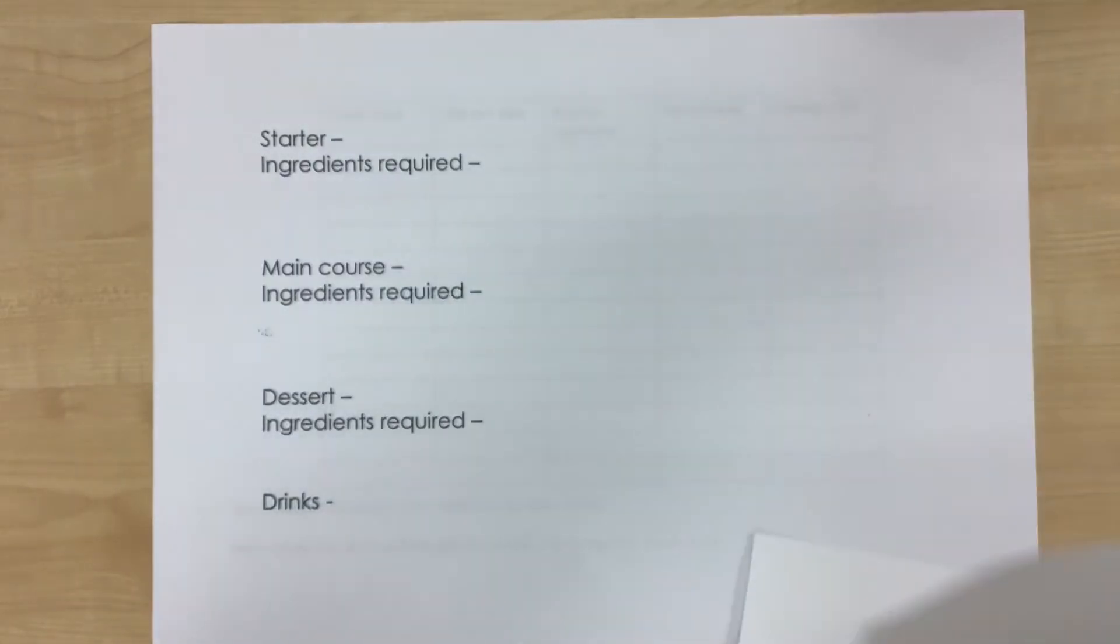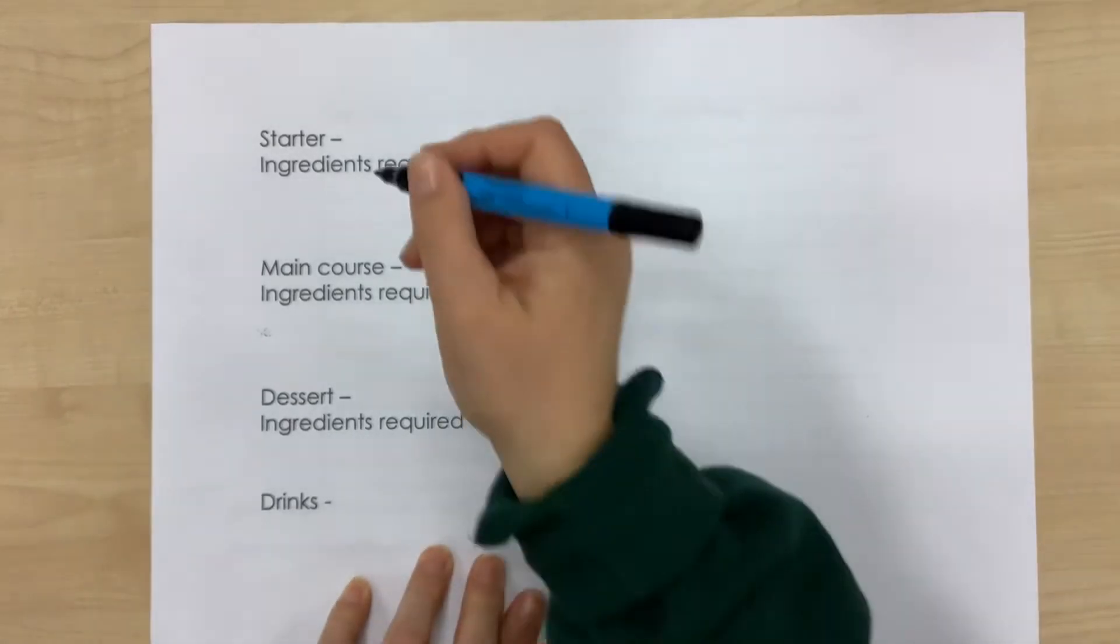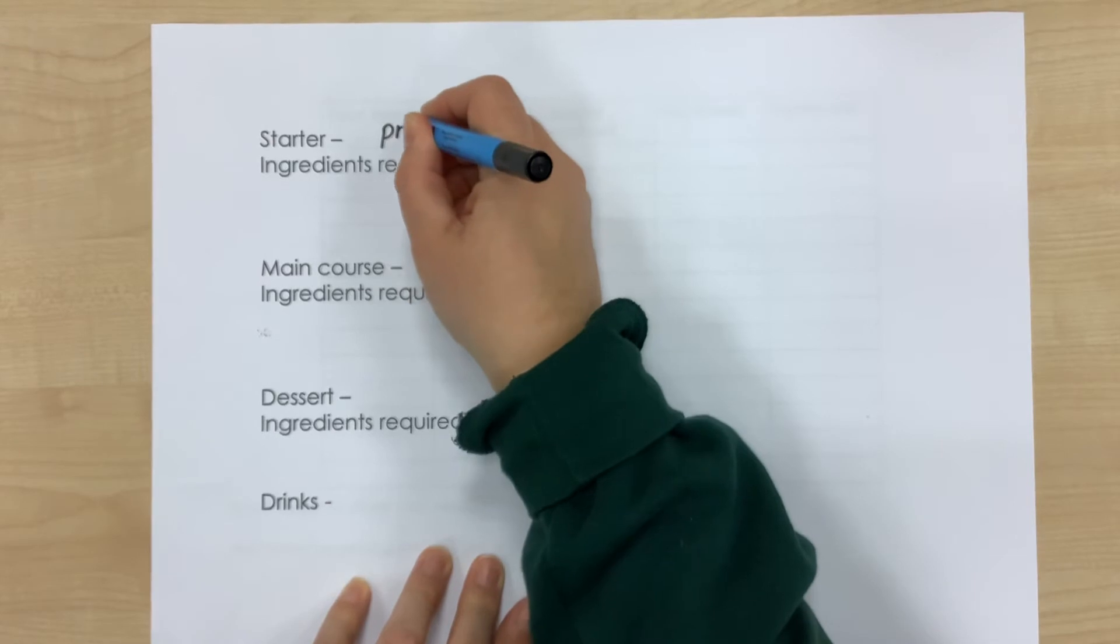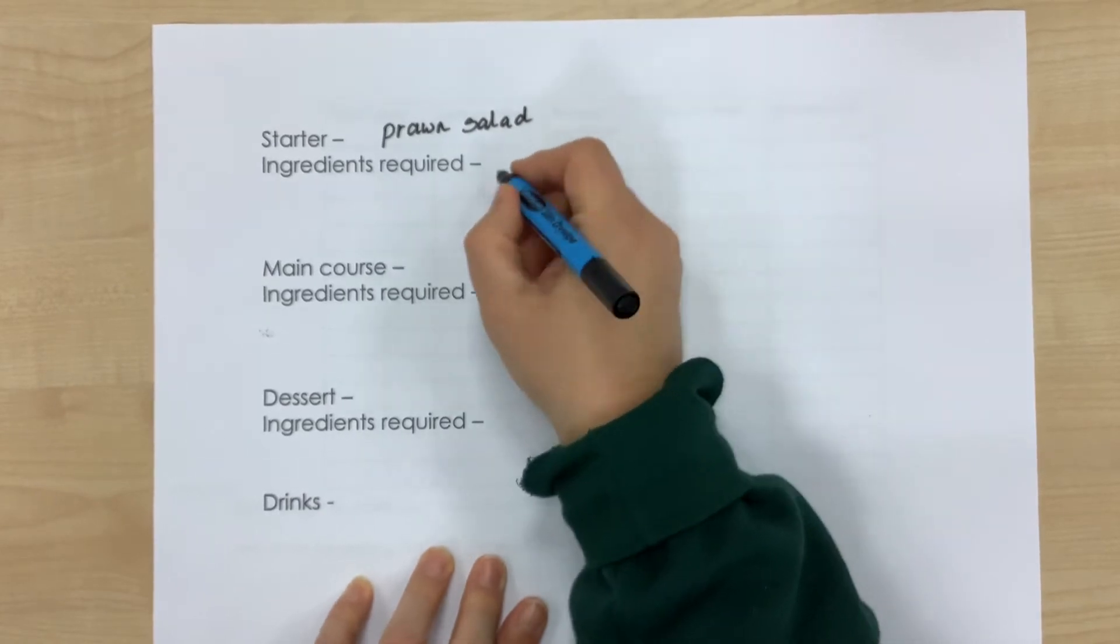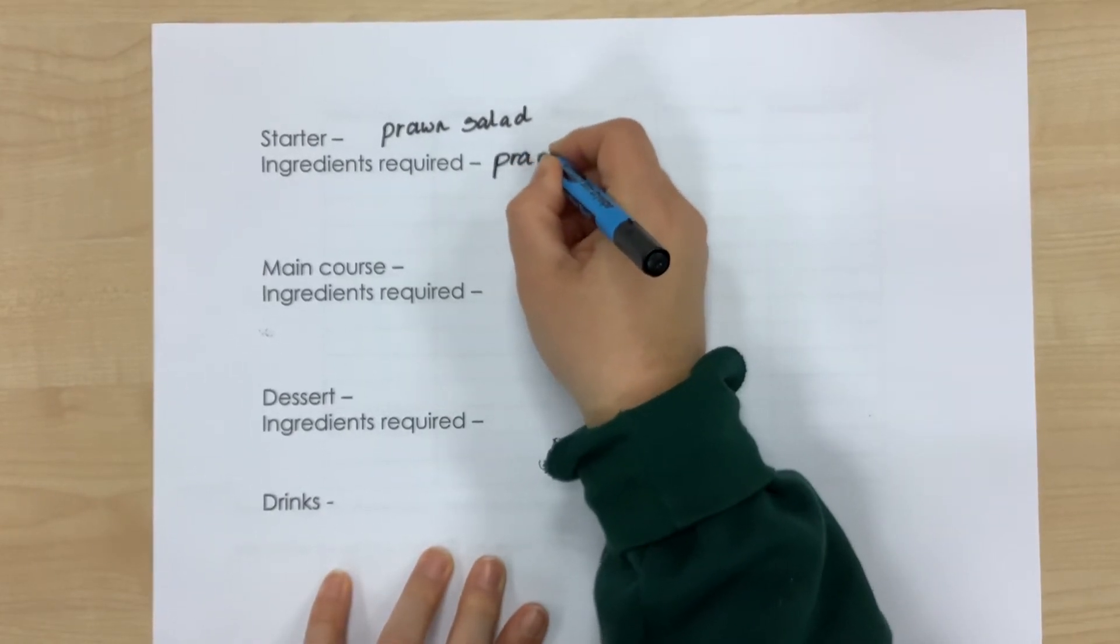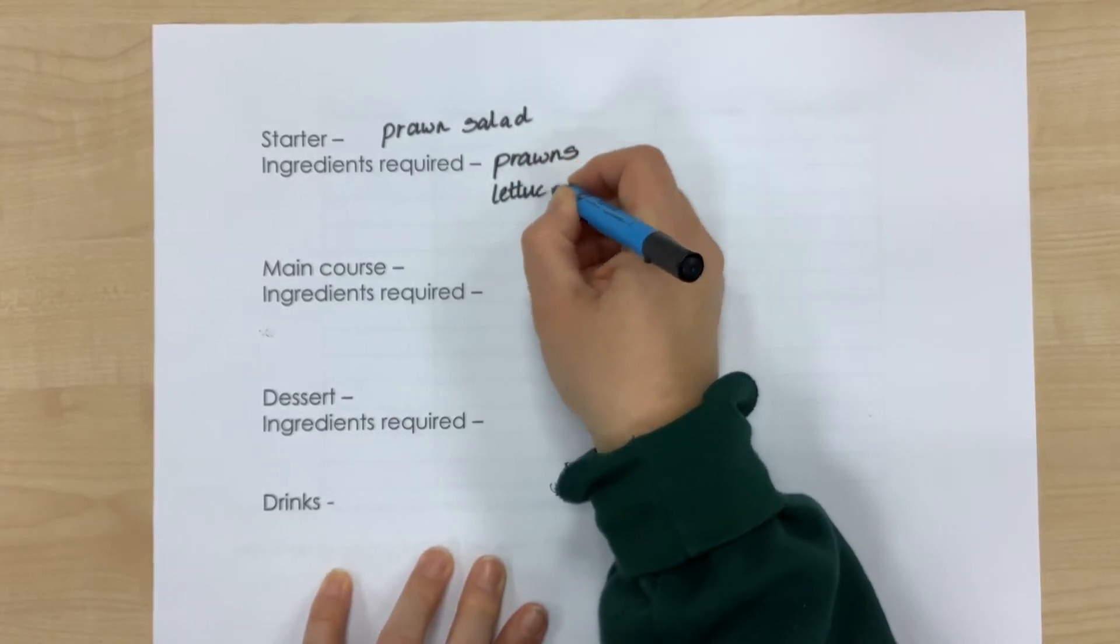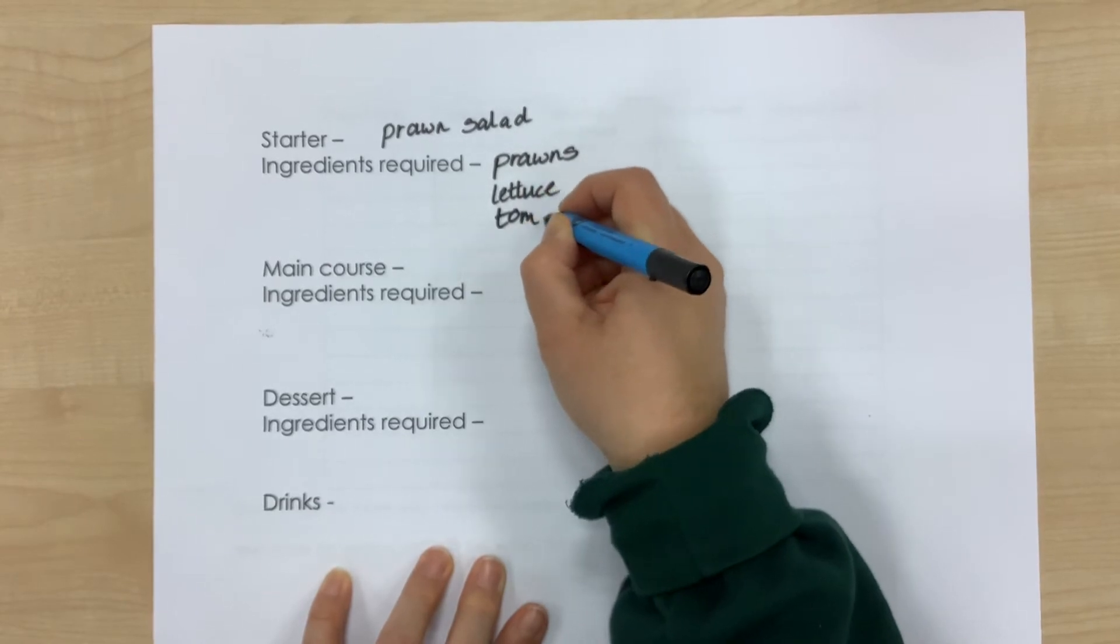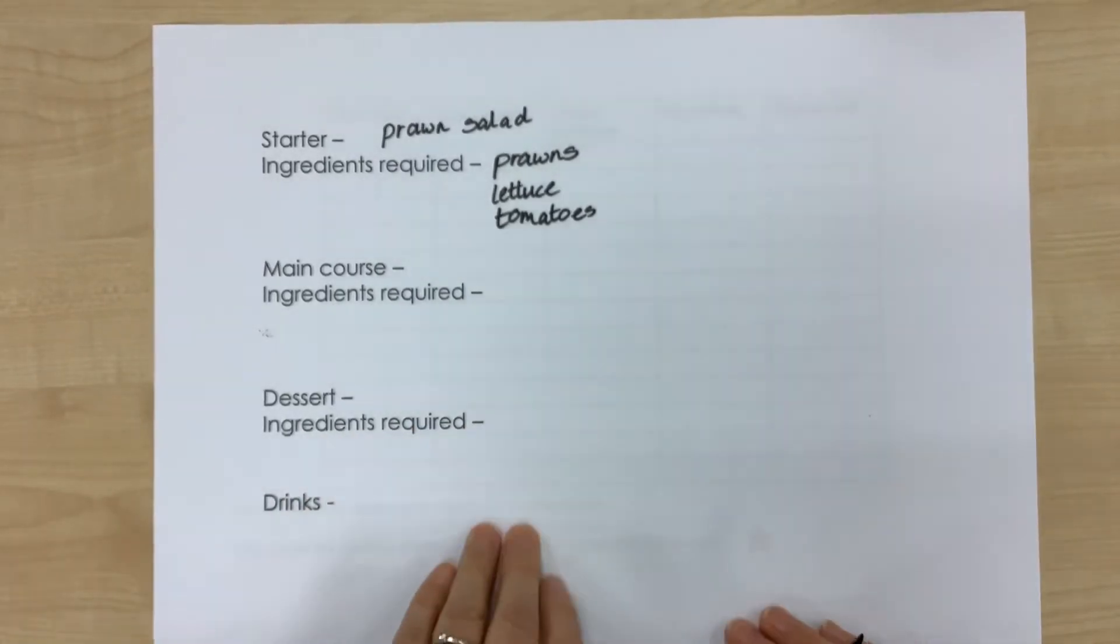And the way I would like you to do it, you will have some of these sheets at the end. So you might want to have a chat with your siblings or your grown-ups and discuss what your three-course meal would be. But say, for example, I was going to do a prawn salad for my starter. So in here, I would write prawn salad. So I would need prawns for my ingredients. I would need some lettuce, and I would need some tomatoes. And then you would do the same for your main course and your dessert and any drinks that you're going to have.